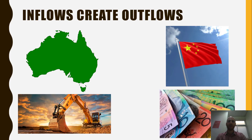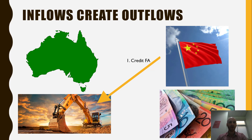In this diagram, we've got Australia, China, mining, and money. China buys a stake in an Australian mining company, which is a credit on the financial account under portfolio investment. As a result, Australia then has to pay dividends to the Chinese investor, which is a debit — an outflow — on the primary income account, which records dividends.